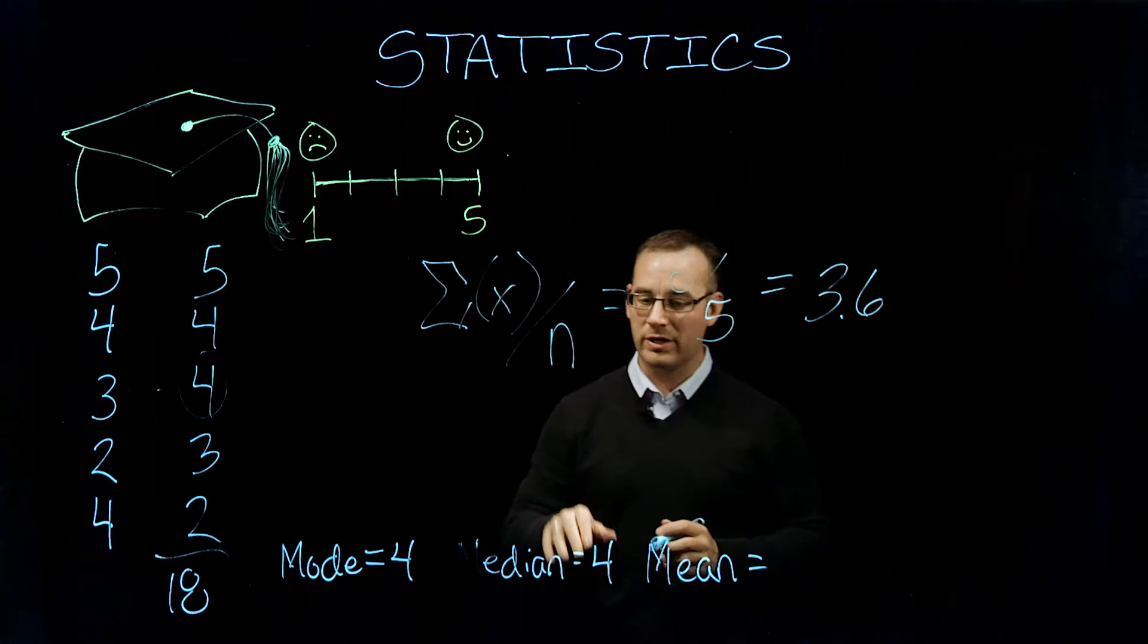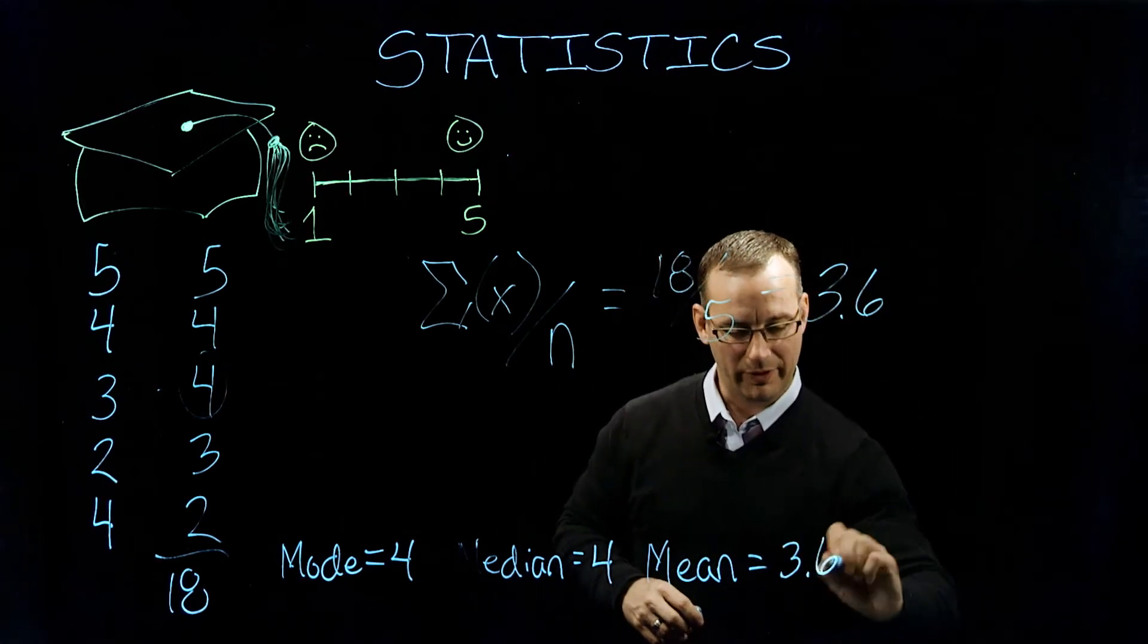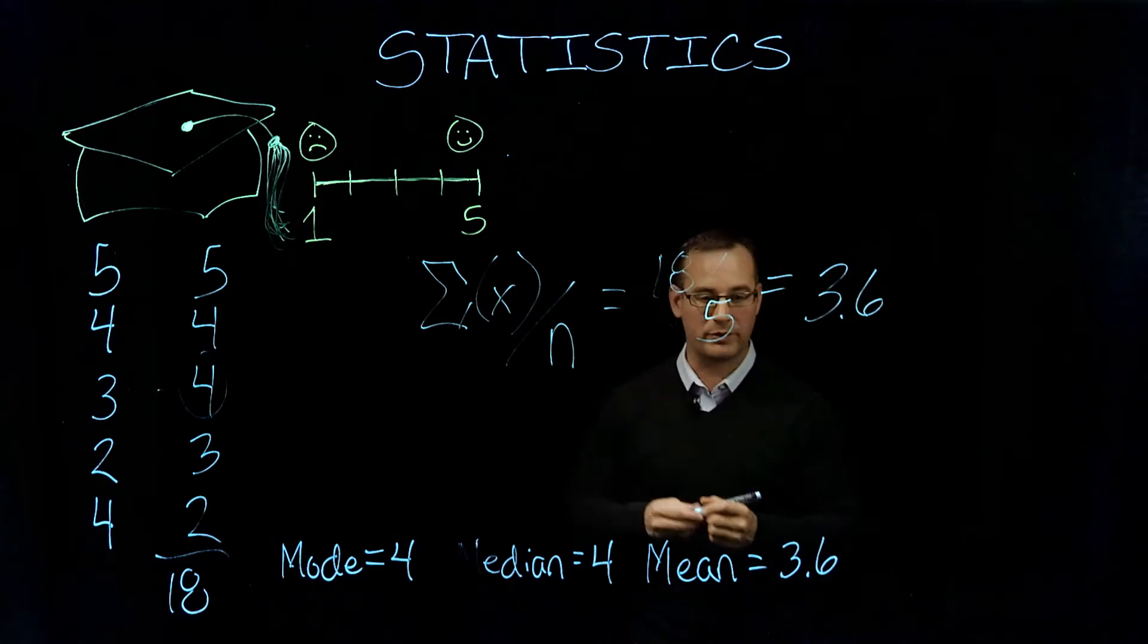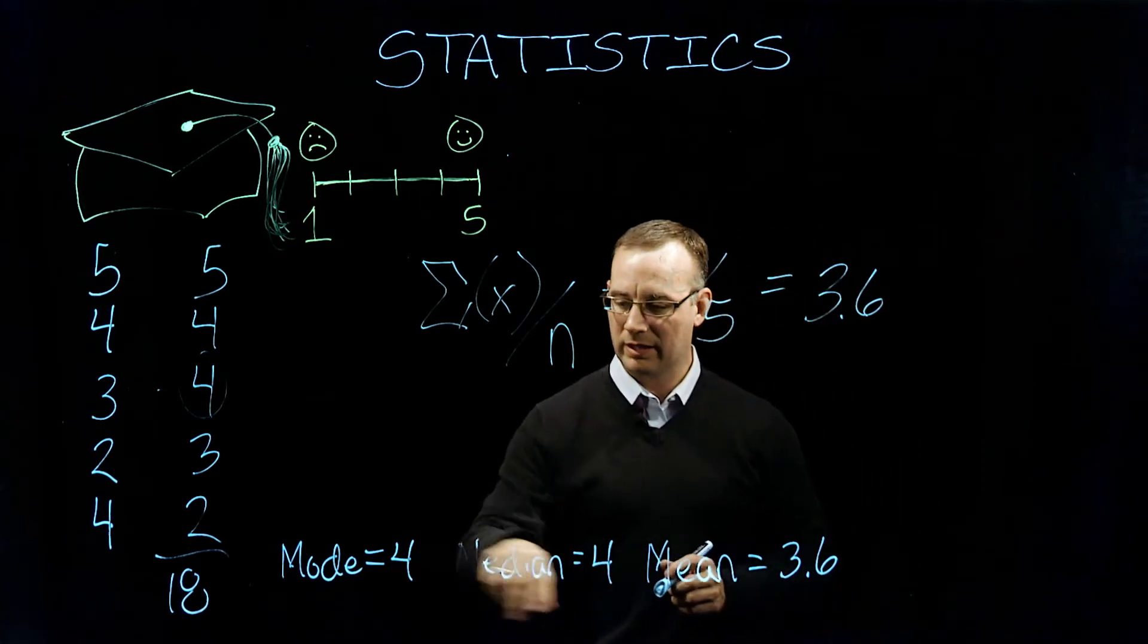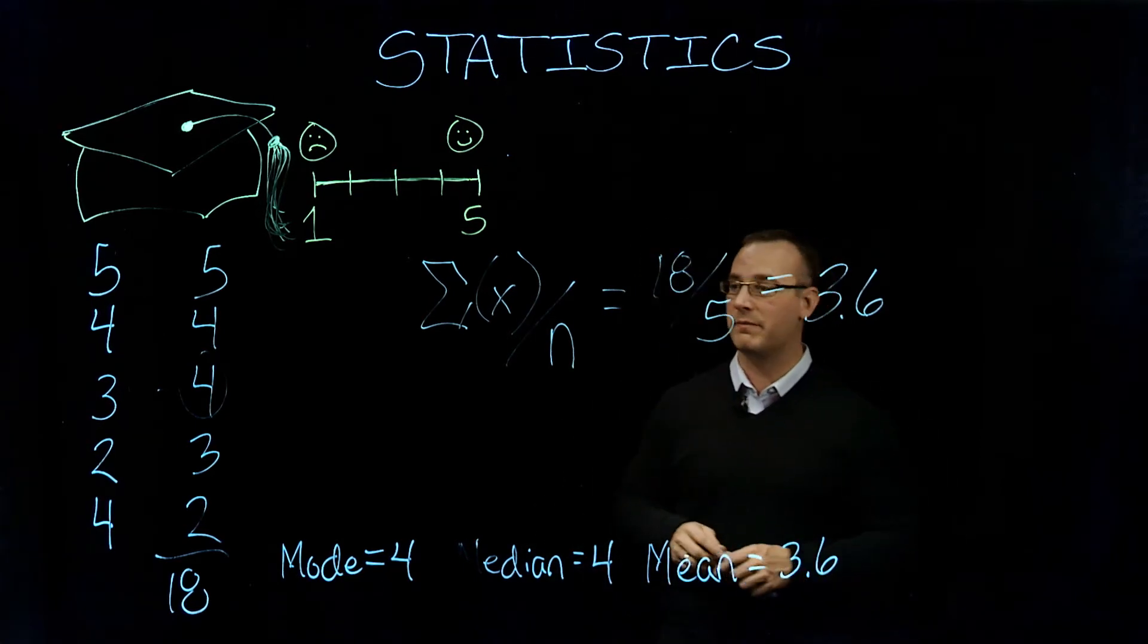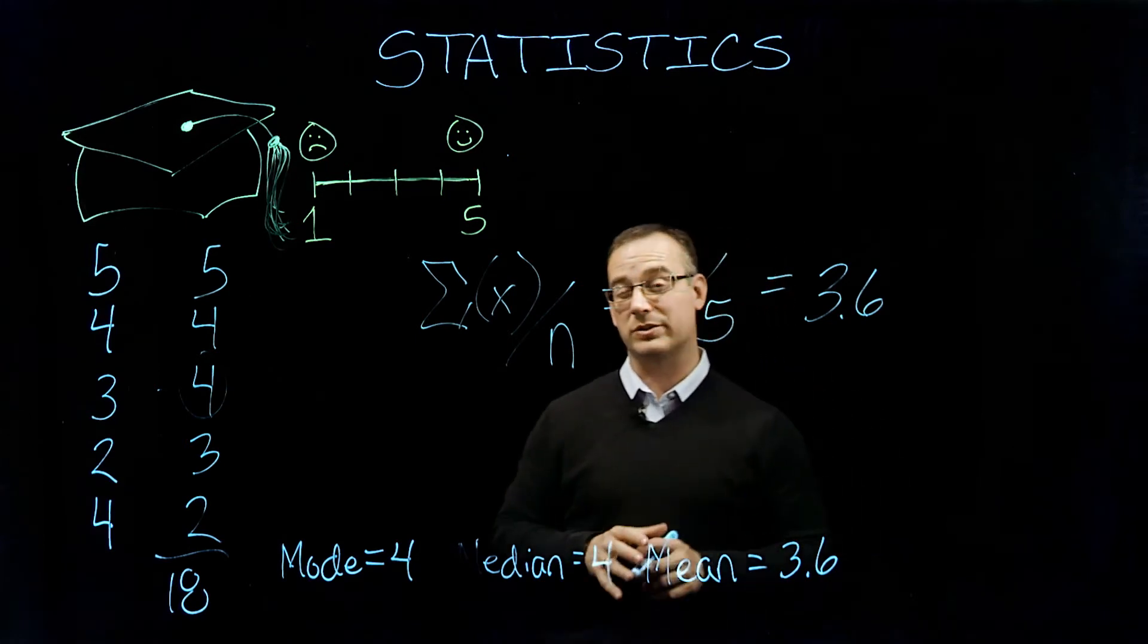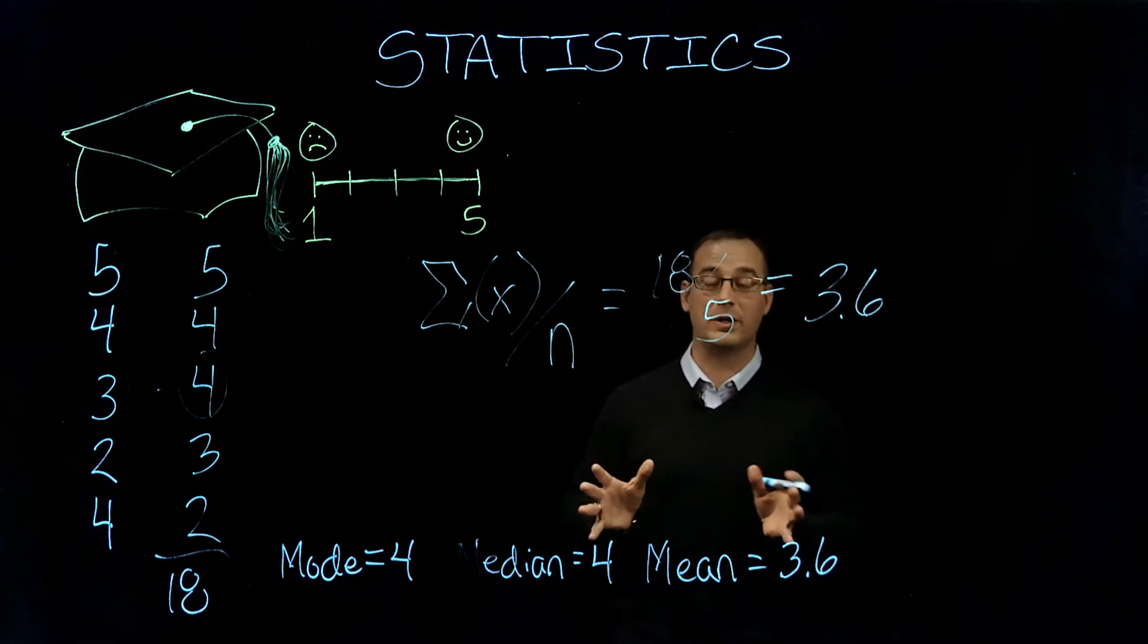So that's how we calculate mode, median, and mean. And what we can see here is that all three of those values, the mode and the median are the same. And our mean is a little bit different from those three. So that's our measures of central tendency, those being the three most common.